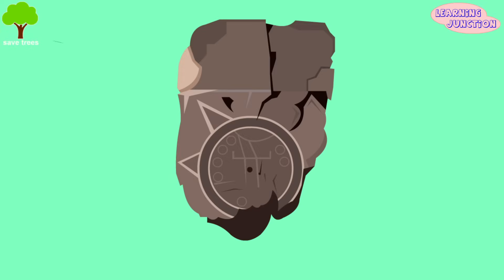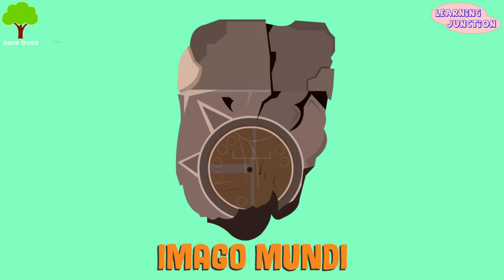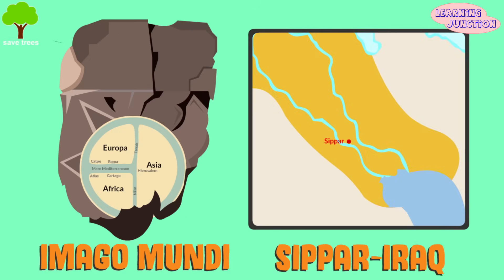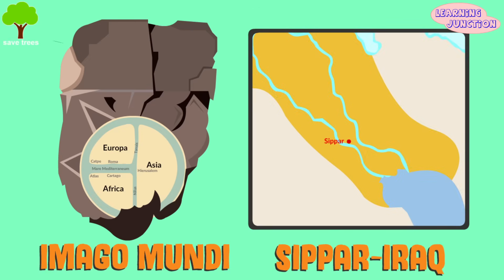Guys, this is the Imago Mundi. It is considered the oldest surviving world map. It was found in a town called Sipar in Iraq.